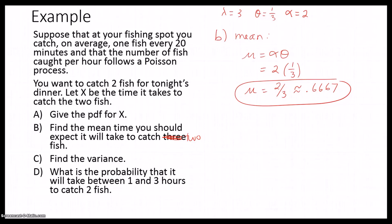Now, if we want to find the variance, the variance is given by the formula α times θ². We take 2 times (1/3)². And that gives us 2/9 or approximately 0.2222.